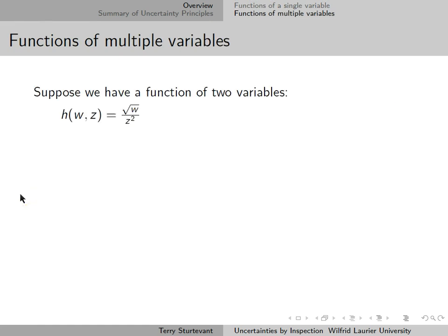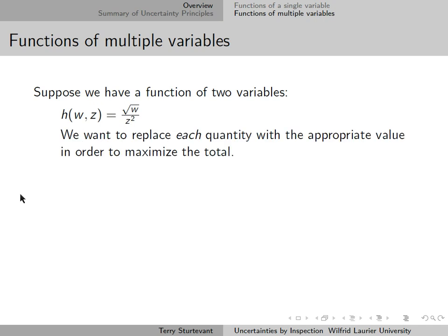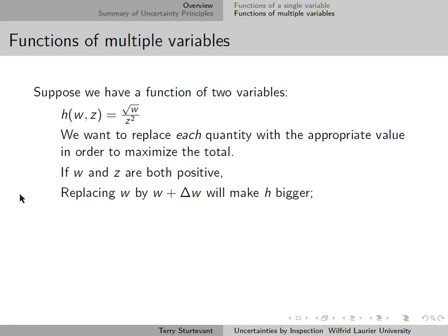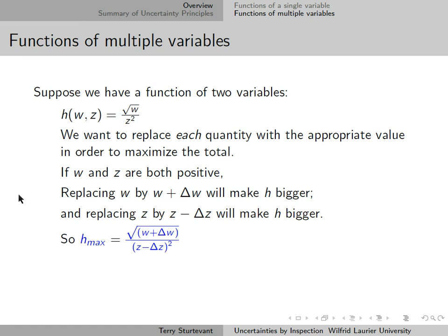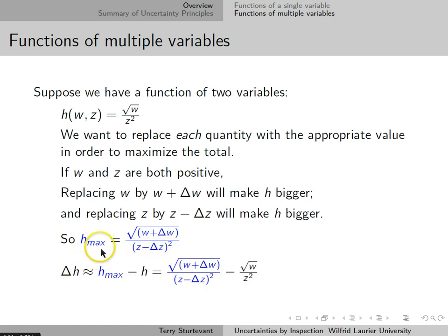Suppose we have a function of more than one variable. Here we have a function h, which has two variables, w and z. We want to replace each quantity with the appropriate value in order to maximize the total. If w and z are both positive, then replacing w by w plus delta w will make h bigger, and replacing z by z minus delta z will also make h bigger. So the maximum value is when we have w plus delta w on the top and z minus delta z on the bottom. The uncertainty is this maximum value minus the nominal value.